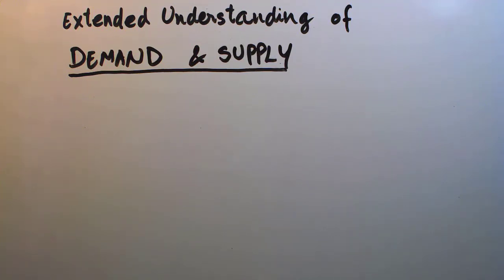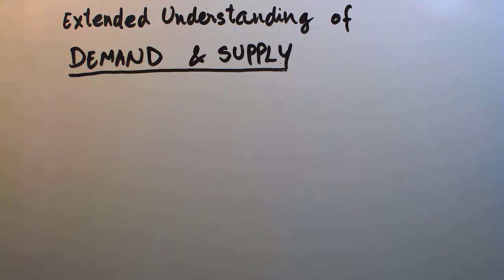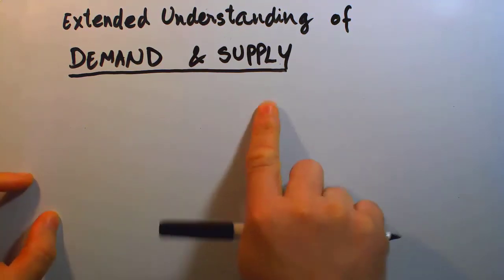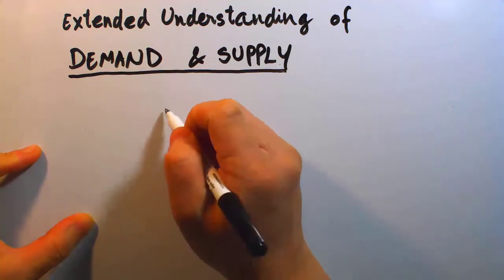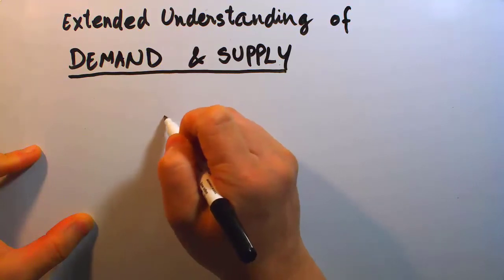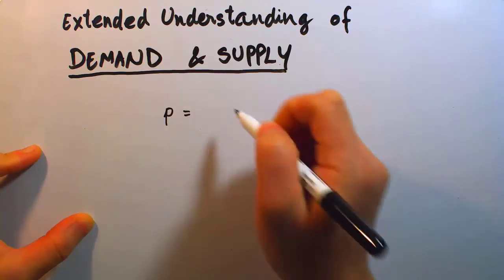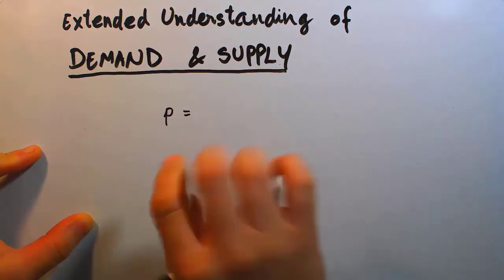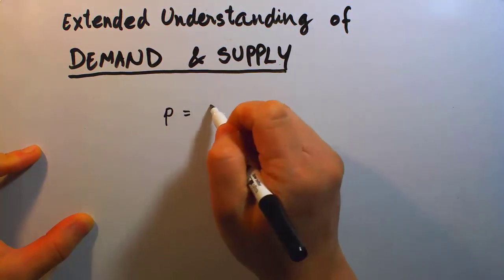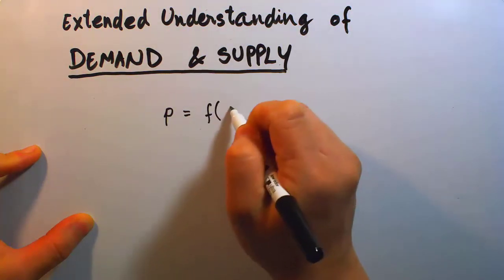Let's look at demand and supply again, but this time we are going to extend our understanding of the mathematical relationship between demand and supply. Demand and supply always have an equation. Most traditionally, we have been representing price as a function — either demand or supply — always setting price as the main function, being some function of Q, the quantity.